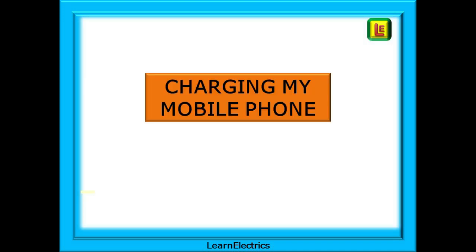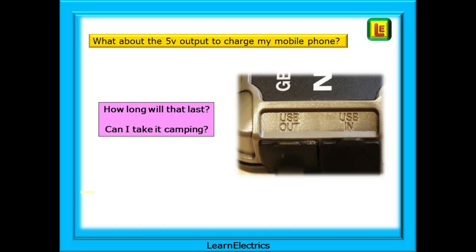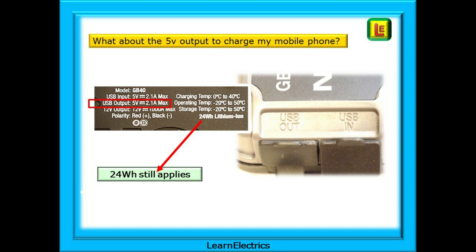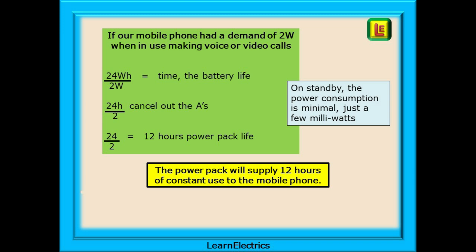This power pack also has a 5-volt USB output for a mobile phone — some people take these camping as they're not heavy and quite compact. From the small print, the USB output is 5 volts with a maximum load of 2.1 amps. The 24 watt hours capacity still applies, but now the voltage is different and the load is much less. If a mobile phone demands 2 watts when making voice or video calls, then 24 watt hours divided by 2 watts gives 12 hours of battery life — more than enough for emergency usage and to recharge the phone. On standby in your pocket, the load reduces to just a few milliwatts.